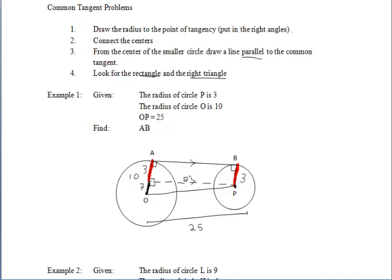Now we can use the right triangle. We know a leg of the right triangle is 7 and the hypotenuse is 25. This is a 7-24-25 Pythagorean family. Since opposite sides of the rectangle are congruent, we know that AB has a length of 24, which is our common external tangent.